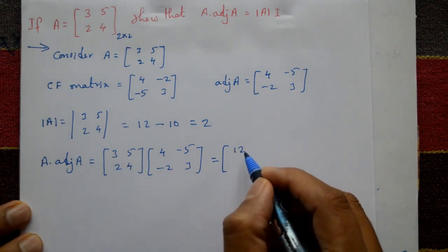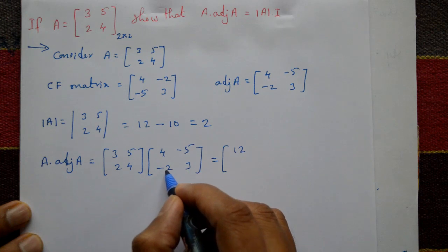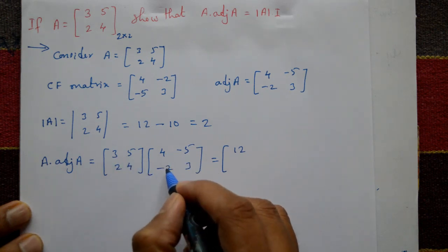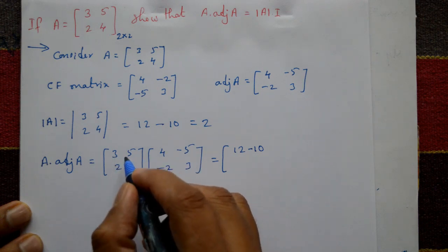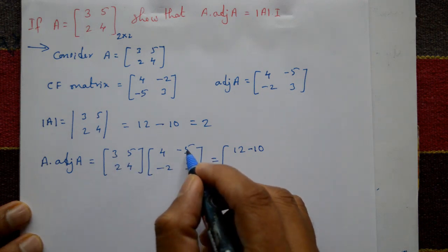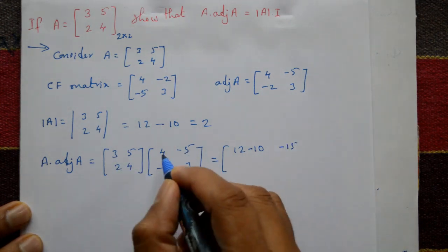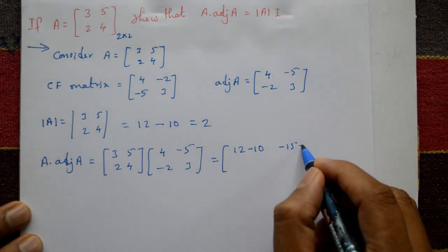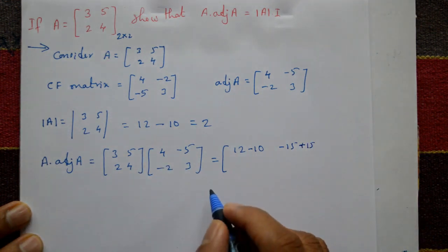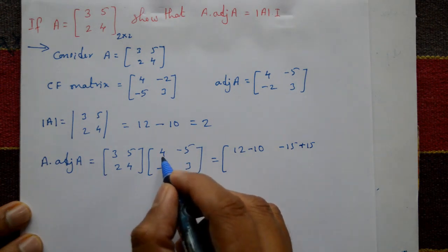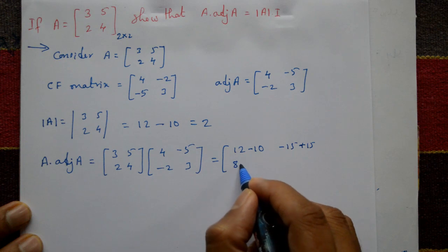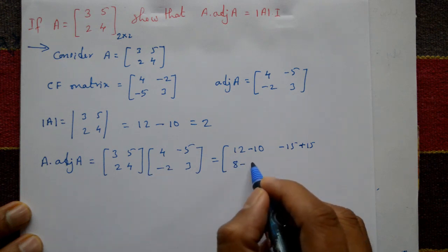This is equal to 3 into 4 is 12, 5 into minus 2 is minus 10. First row into column: 3 into minus 5 is minus 15, 5 into 3 is 15, gives 0.